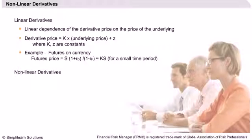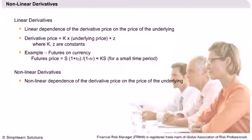In the case of non-linear derivatives, the price of the derivative does not move at a constant rate with the change in the price of the underlying. For example, in the case of options, the price depends on multiple risk factors, such as time to expiry, underlying price, and volatility.